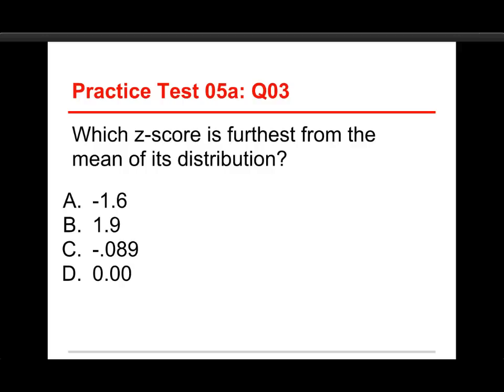Well, the mean of a distribution of z-scores is 0. And so the answer here is 1.9. And the reason for that is we're looking for the absolute value. So you just ignore the plus and minus. And whichever one has the biggest number, the biggest absolute value is the one that's farthest away.